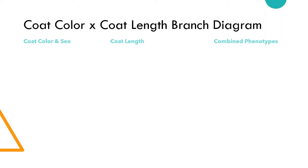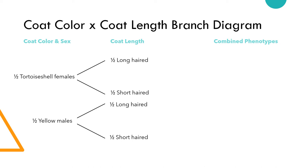Using our Punnett squares, we expect to see half of our kittens to be tortoiseshell females, and half of our kittens to be yellow males. From here, we expect half of our tortoiseshell females to have long hair and half to have short hair. And the same goes for our male cats. Half will be long-haired and half will be short-haired.